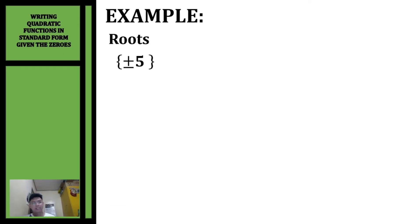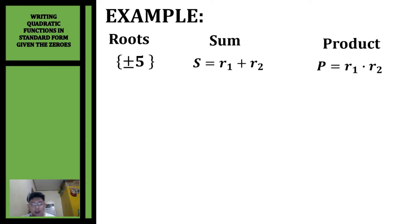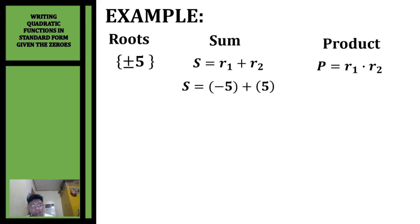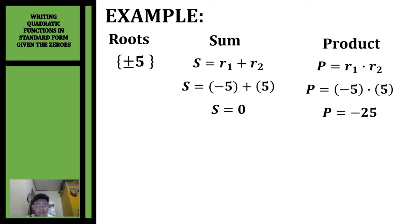Let's have another example. We're going to write the quadratic function given the roots positive/negative 5. We have two roots: positive 5 and negative 5. Let's get the sum: negative 5 plus 5 equals 0. Now let's get the product: negative 5 times 5 equals negative 25. Now that we have our sum and product, we can use the formula x squared minus sx plus p equals zero.